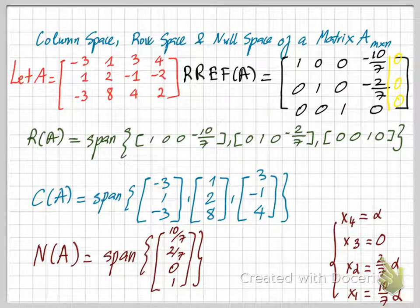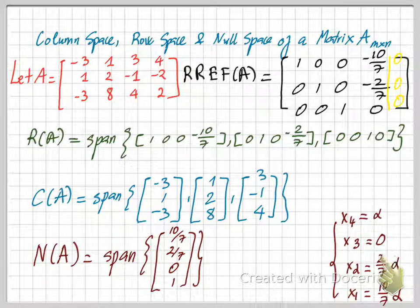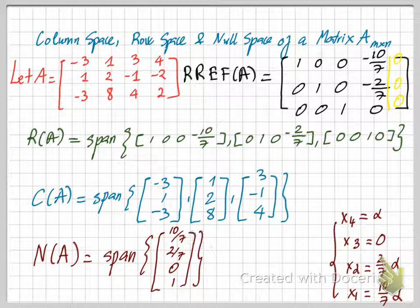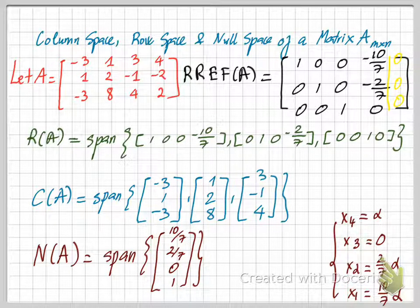That vector is formed by the coefficients of alpha for x1, x2, x3, and x4. So we have 10 over 7, 2 over 7, 0, and 1 — and this vector forms a basis for the null space of A.